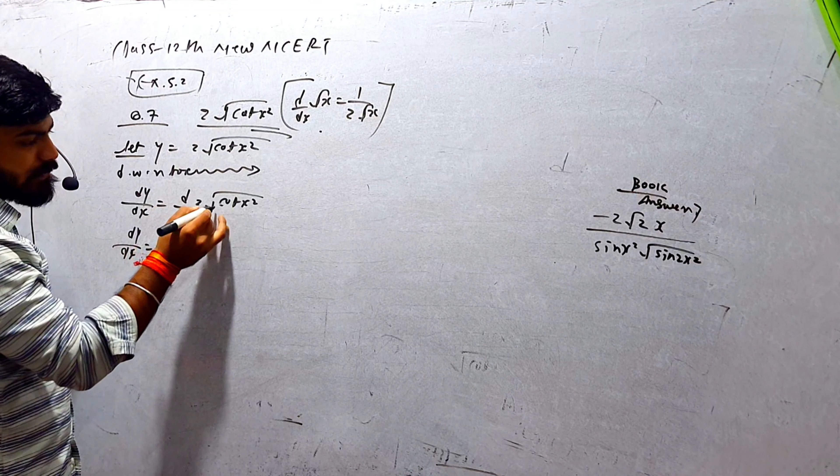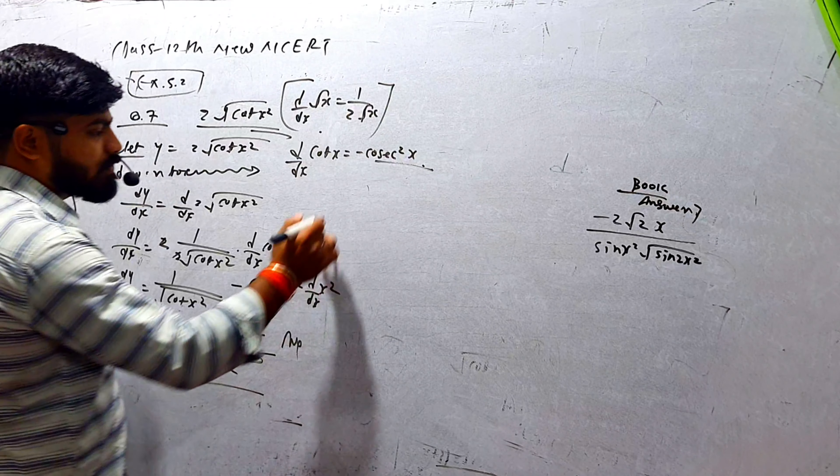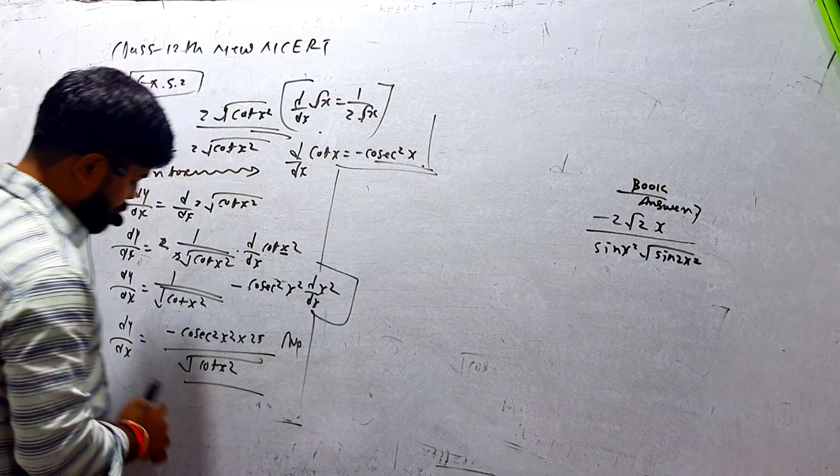d/dx of cot(x) = minus cosec²(x)। तो cot(x²) का differentiation: minus cosec²(x²), और angle x² का differentiation = 2x, by chain rule। dy/dx = minus cosec²(x²) · 2x / √(cot x²)। यह हमारा answer है, लेकिन book का answer है: minus 2√2·x / sin(2x²)। उस form में लाना है।